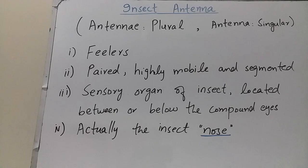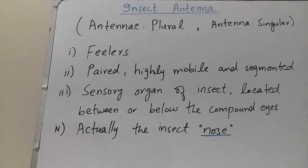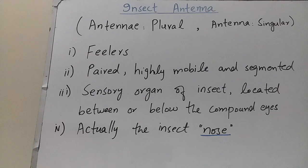In this video, I will discuss the structure of antenna, various modifications and types of antennae found in different insects, and the functions of antenna. The word 'antenna' is singular and 'antennae' (with an 'e' at the end) is plural. Antennae are also known as feelers because insects feel their environment through them. Antennae are paired, highly mobile, and segmented organs.